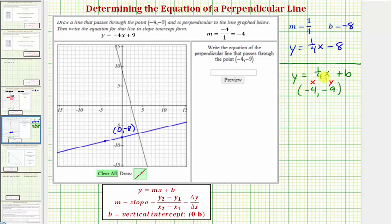We could also use point-slope form of a line, but let's just use the slope-intercept form. So we'll substitute negative nine for y, that gives us negative nine equals one fourth times x, which is negative four, or negative four over one, plus b.